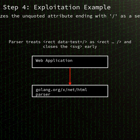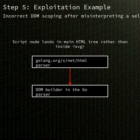At the root of the issue is how the Go HTML tokenizer handles attributes that are unquoted and end with a slash. When parsing tags inside SVG or other non-HTML namespaces, the tokenizer can mark those tags as self-closing even when they're not intended to be.